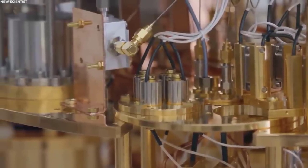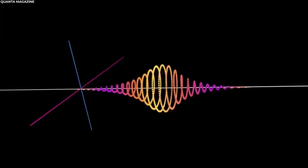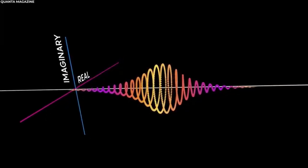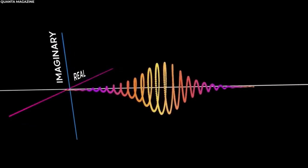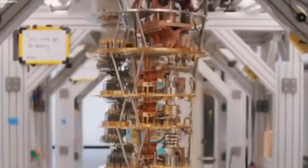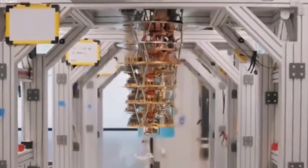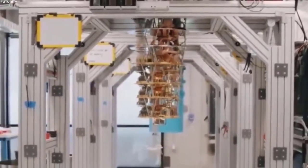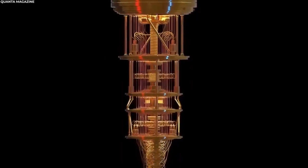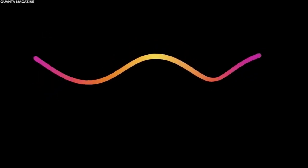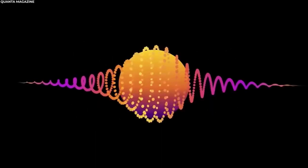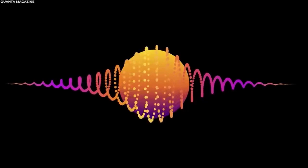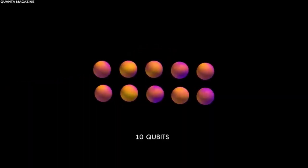During computation, the quantum computer measures the qubits to extract information. But here's the thing about quantum computers: when you measure a qubit, it collapses into a single state, and all that amazing superposition and entanglement vanish in an instant. It's like a magician revealing their trick and the magic disappears. To make the most out of the measurements before the collapse, quantum algorithms employ some advanced techniques. These techniques extract meaningful results while the superposition and entanglement are still intact, maximizing the power of quantum computation.